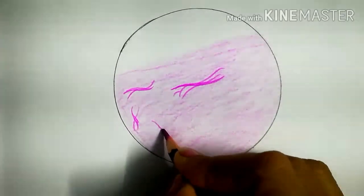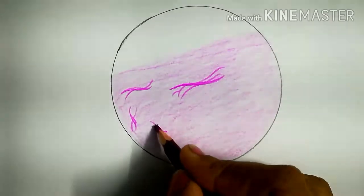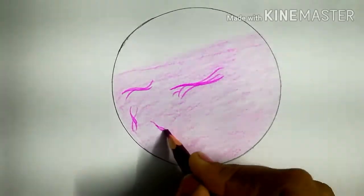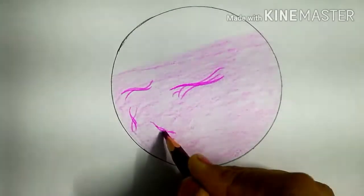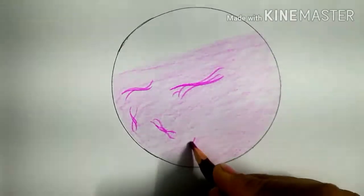We can also say these are star shaped cells. Like this. It will have multiple projections. These are star shaped cells.